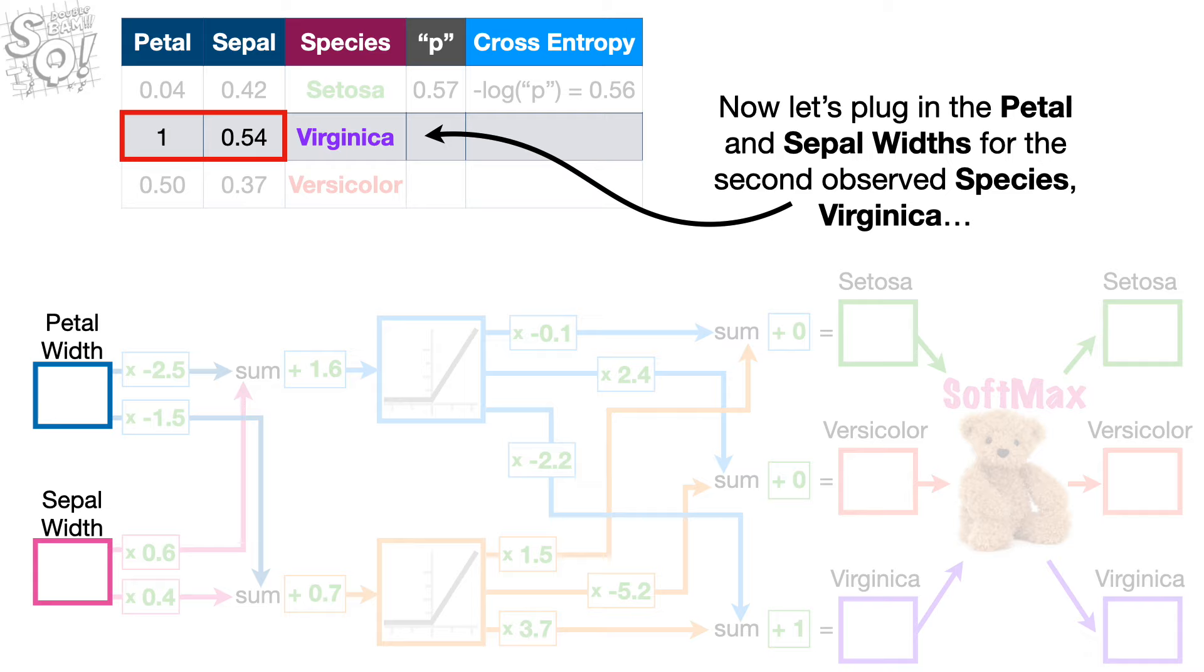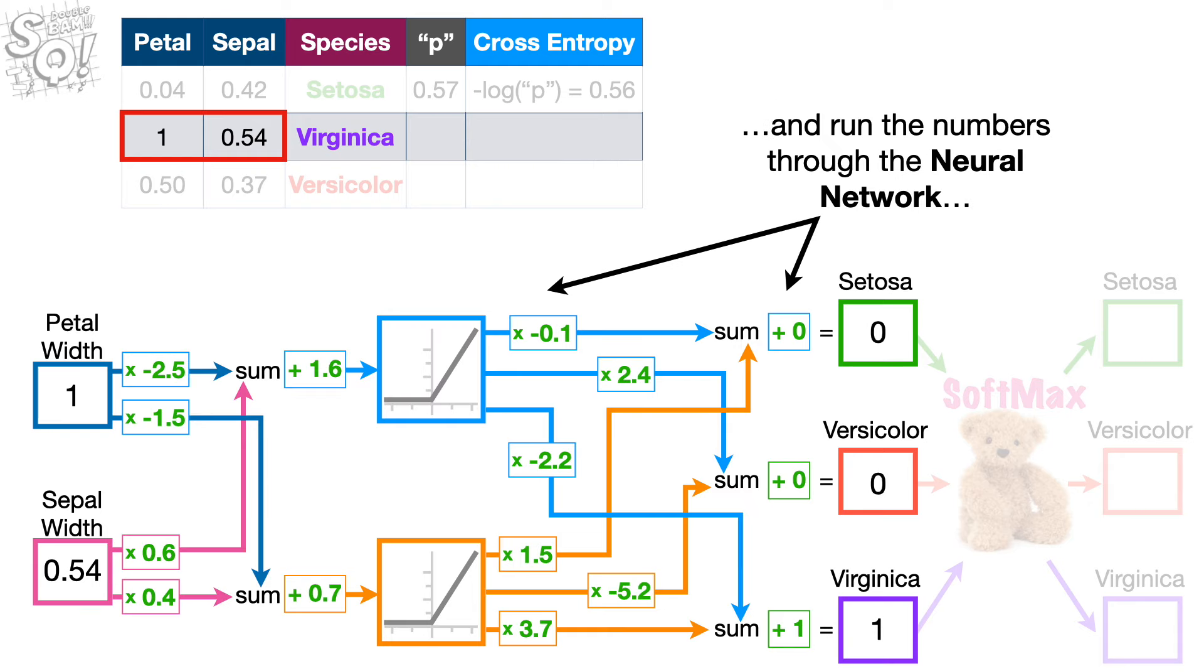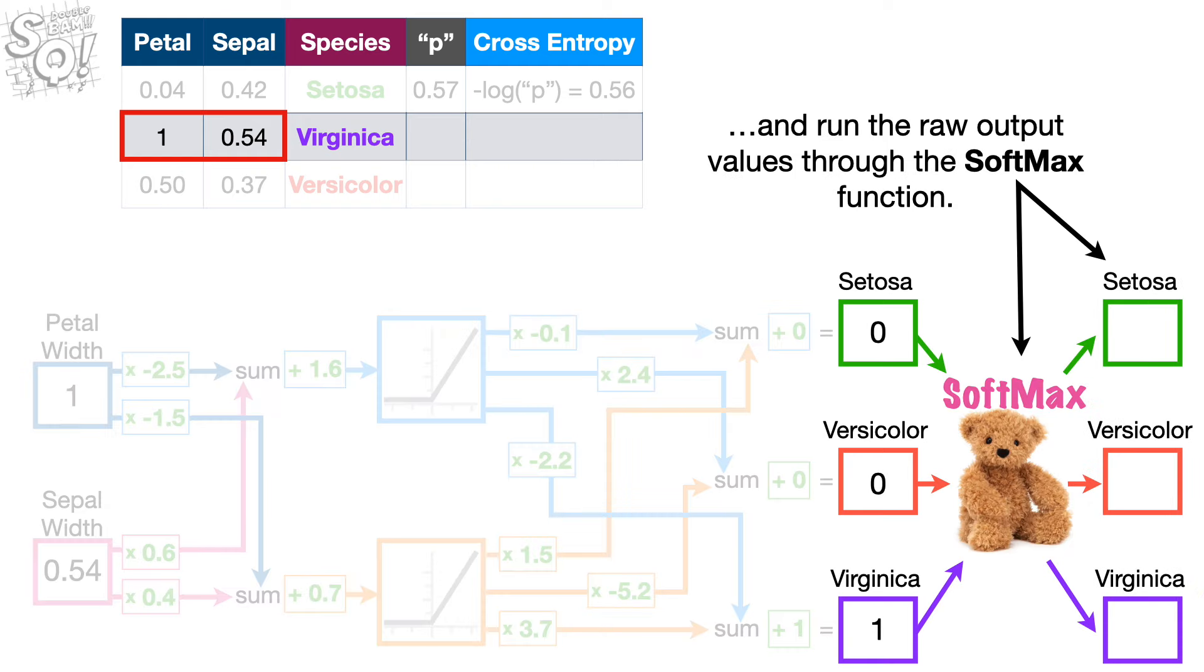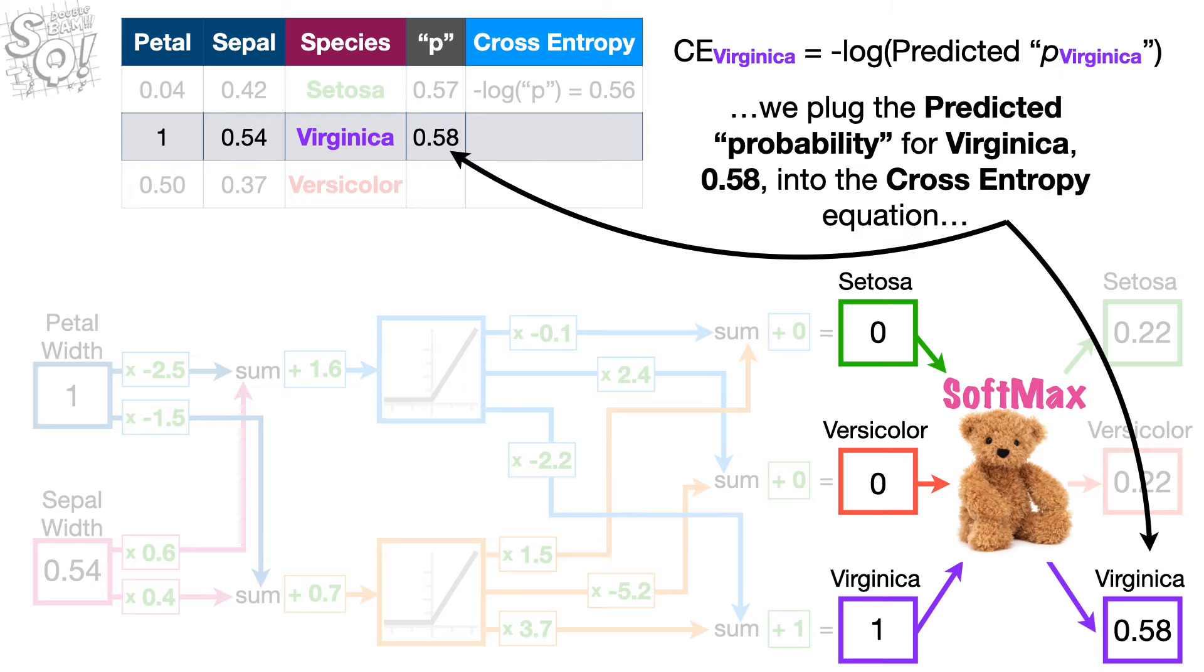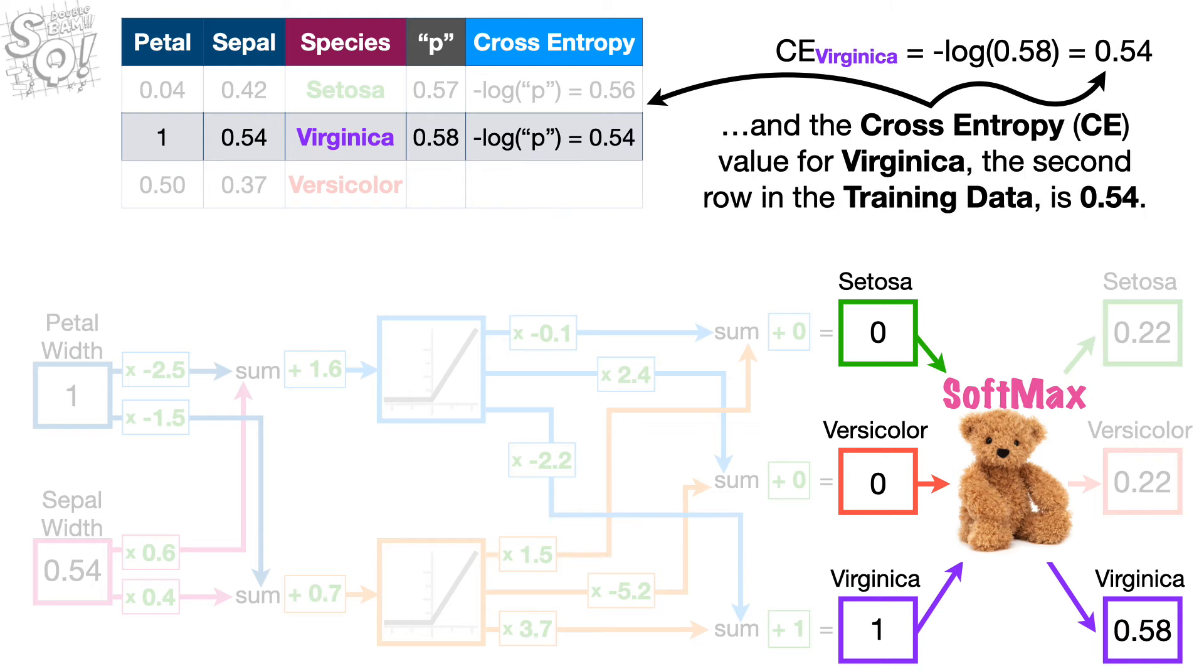Now let's plug in the petal and sepal widths for the second observed species, Virginica, and run the numbers through the neural network, and run the raw output values through the softmax function. Now, because we know the data are from Virginica, we plug the predicted probability for Virginica, 0.58, into the cross-entropy equation, and the cross-entropy value for Virginica, the second row in the training data, is 0.54.